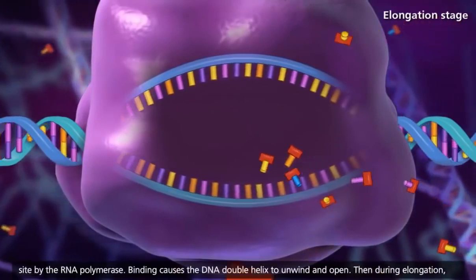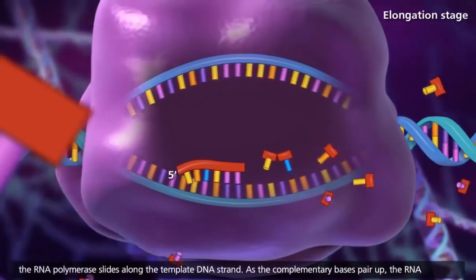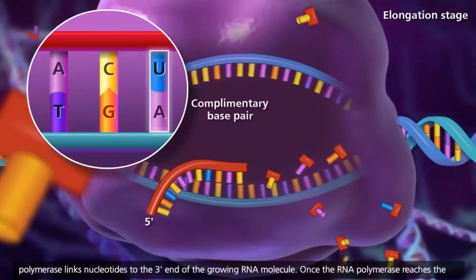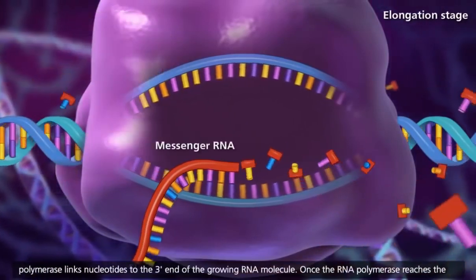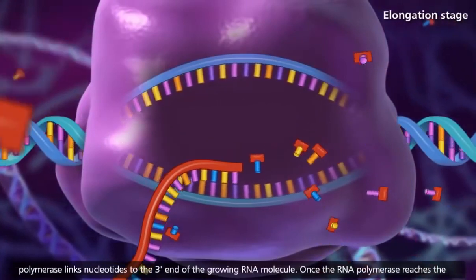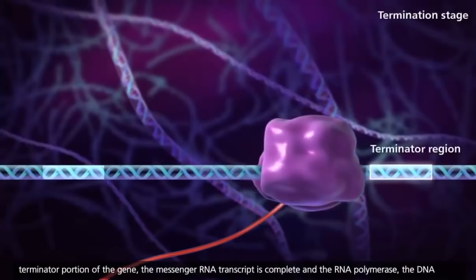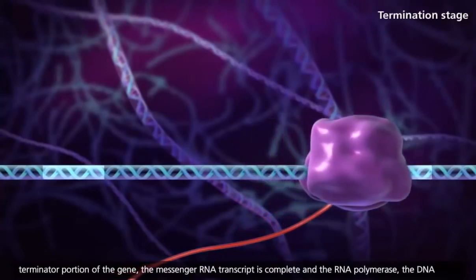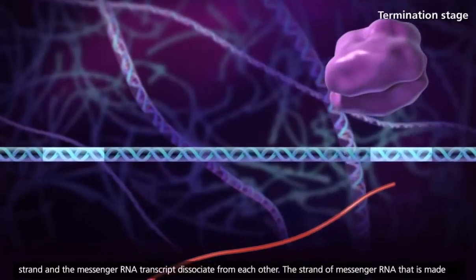Then during elongation, the RNA polymerase slides along the template DNA strand. As the complementary bases pair up, the RNA polymerase links nucleotides to the three-prime end of the growing RNA molecule. Once the RNA polymerase reaches the terminator portion of the gene, the messenger RNA transcript is complete, and the RNA polymerase, the DNA strand, and the messenger RNA transcript dissociate from each other.